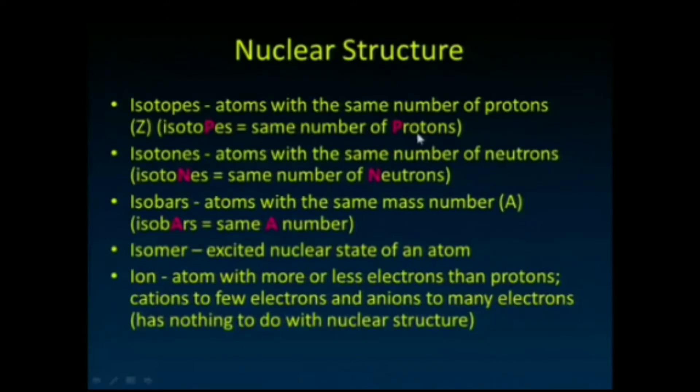We're going to talk about isotones, which are atoms that have the same number of neutrons. We can utilize some of these to create radioactive elements for imaging. There's also isobars—atoms that have the same atomic mass number, so if you add up the number of protons plus neutrons, they're the same. There's also the term isomer, which is the excited nuclear state of an atom. I want to distinguish all those names from the ion, which is the atom that has more or less electrons than protons.